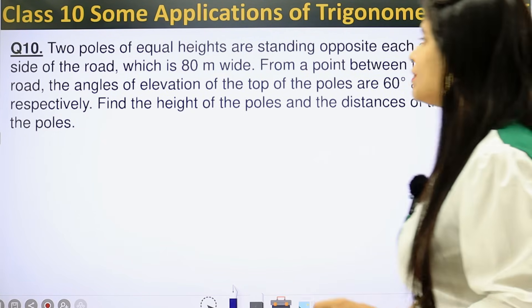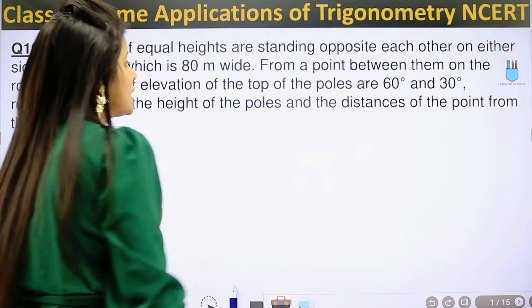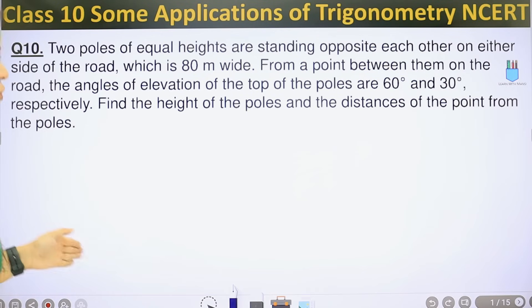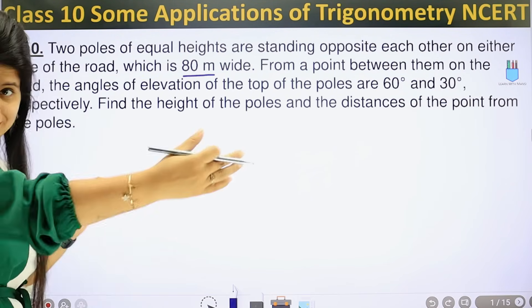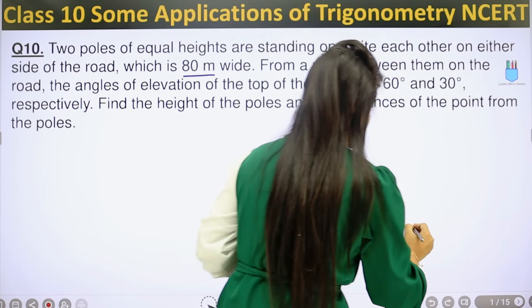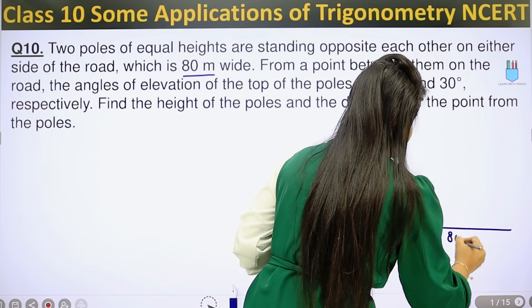The question says two poles of equal height are standing opposite each other on either side of the road which is 80 meters wide.